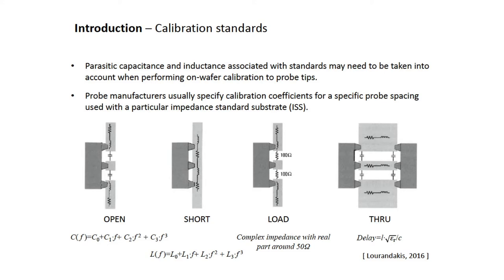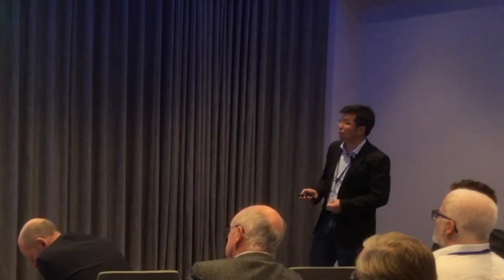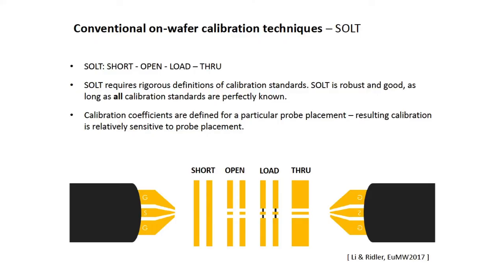These parasitic capacitance and inductance need to be taken into account if you want to perform on-wafer calibration for probe tips. A probe manufacturer usually specifies calibration coefficients — C1, C2, and LL — for specific probe spacing and used with a particular impedance standard substrate. For some calibration techniques that rely on the accuracy of these calibration coefficients, they will be very sensitive to probe placement errors, because these coefficients are for specific probe spacing used with particular impedance standard substrates.